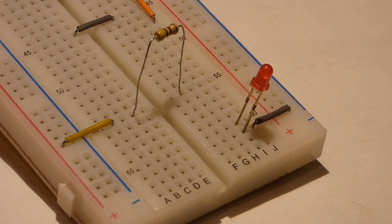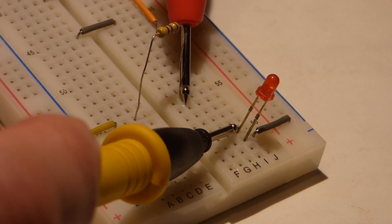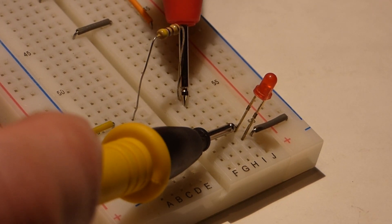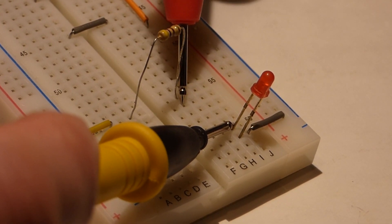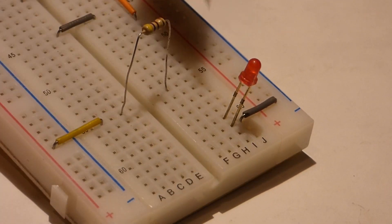So we will put the black probe towards the negative side and then the red probe towards the positive side, and then the current will flow through the meter, from the resistor through the meter to the LED.